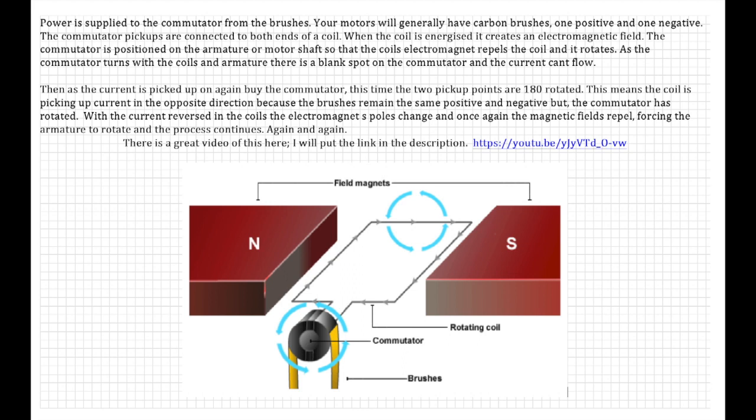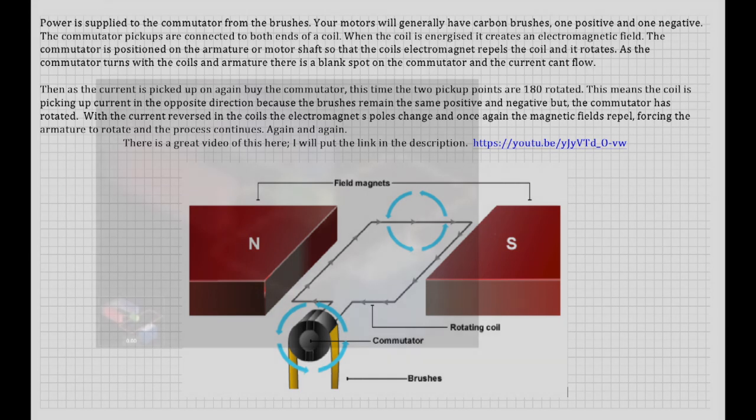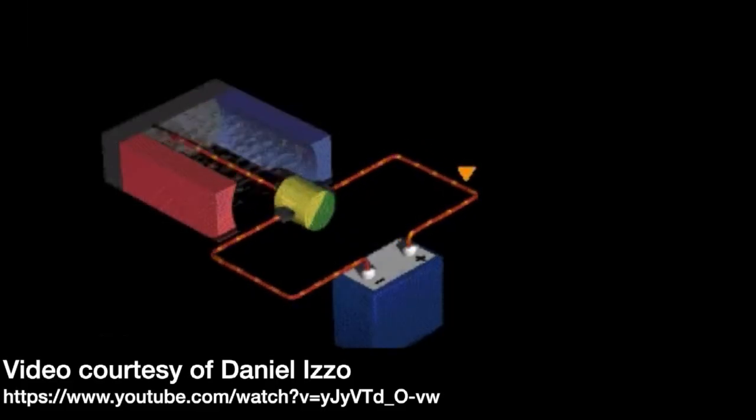Power is supplied to the commutator from the brushes. Your motor will generally have carbon brushes, one positive and one negative on a DC motor. The commutator is positioned on the armature or motor shaft so that the coil's electromagnetic field repels the coil and it rotates. As the commutator turns with the coils and the armature, there is a blank spot on the commutator. This stops or interrupts the current flow. The armature and the commutator have momentum so they continue to rotate. Then the current is picked up again by the commutator, this time the two pickup points are 180 degrees rotated. This means the coil is picking up the current in the opposite direction because the brushes remain in the same position, positive and negative, but the commutator has rotated. With the current reversed in the coils, the electromagnetic poles change and once again the magnetic fields repel, forcing the armature to rotate, and the process continues again and again.